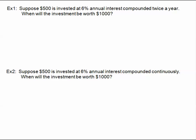These problems are almost identical. There's only one change. In this first one, we're compounding our money twice per year, and in the second one, we're compounding continuously. Everything else stays the same. We're investing $500, it's at a 6% annual interest rate, and we're trying to see how long it's going to take to double to $1,000.